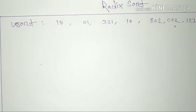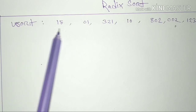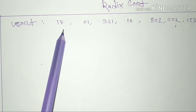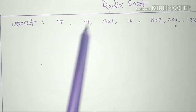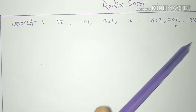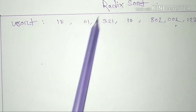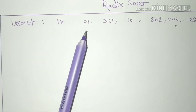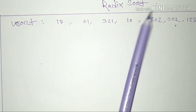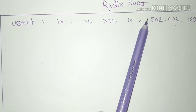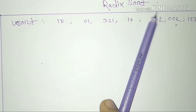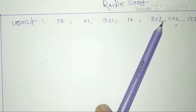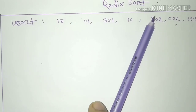So, what we are going to do is Radix Sort. First, we take an unsorted value. Then we define how we are going to separate and sort them. First of all, we define what we will look at.